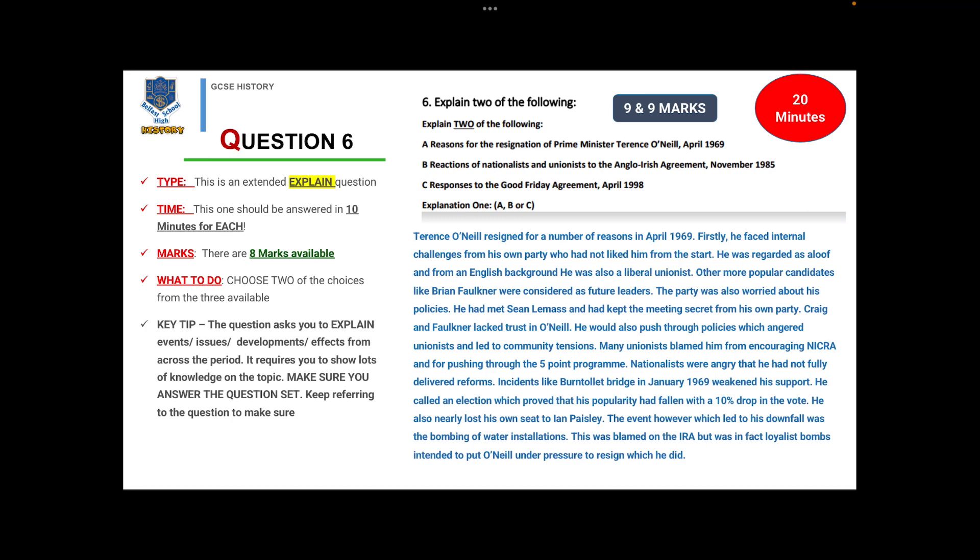The party was worried about his policies. He had met Sean Lemass and kept the meeting secret from his own party. Craig and Faulkner lacked trust in O'Neill. He pushed through policies which angered unionists and led to community tensions. Many unionists blamed him for encouraging NICRA and for pushing through the five-point program. Nationalists were angry that he had not fully delivered reforms. Incidents like Burntollet Bridge in January 1969 weakened his support. He called for an election which proved his popularity had fallen with a 10% drop in the vote. He also nearly lost his own seat to Ian Paisley. The event which led to his downfall was the bombing of water installations, blamed on the IRA but in fact loyalist bombs intended to put O'Neill under pressure to resign, which he did.